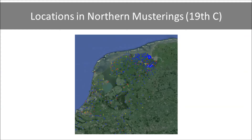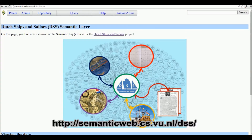One example is this visualization of locations of the northern musterings from the 19th century — showing where people came from. I will now show a short demo in which I browse through the collection.